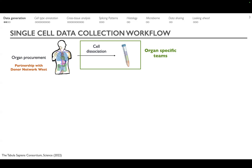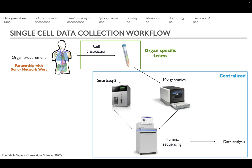If we continued on this diverging path where each team did their own processing, we would encounter many technical artifacts. So after cell dissociation, we centralize the processing of the samples to reduce artifacts — for example, from different strategies for sorting cells required for SMART-seq libraries, or in how 10x Genomics is handled, and also how we think about sequencing depth. All of this is centralized.